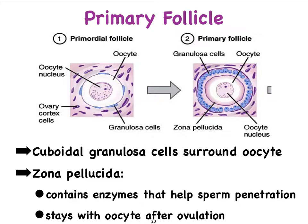Notice on this slide that our granulosa cells look much more cuboidal, which tells us we are looking at a primary follicle. We have also formed what is referred to as the zona pellucida — a layer that separates the oocyte from the granulosa cells — and it contains enzymes that will assist sperm cells in penetrating the oocyte.